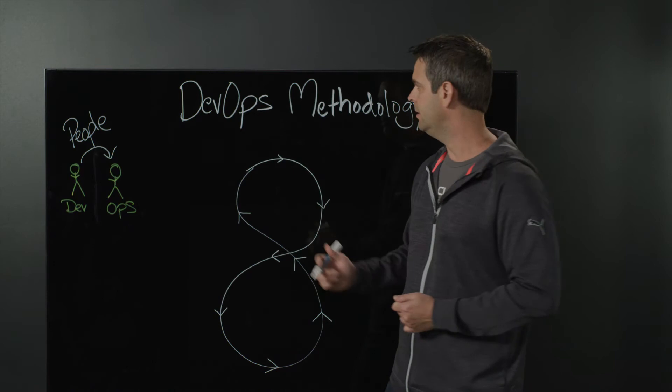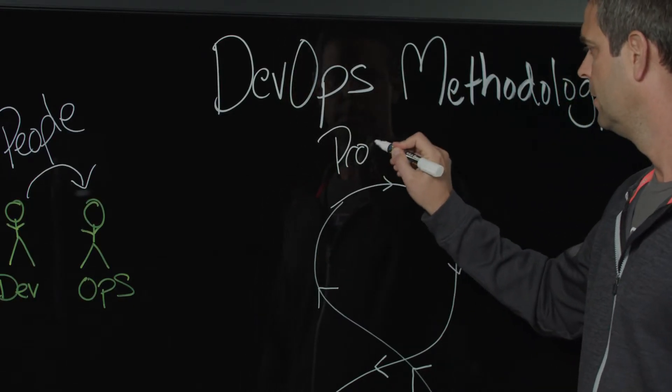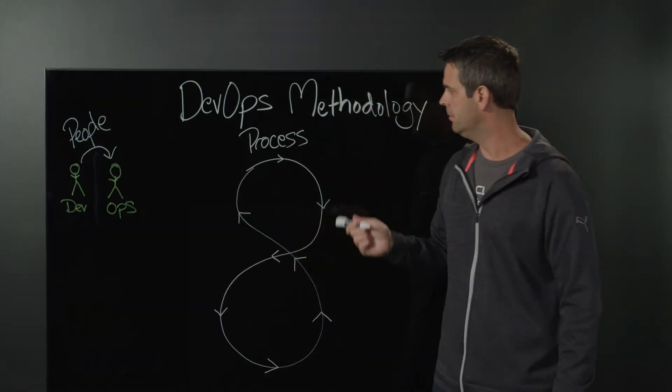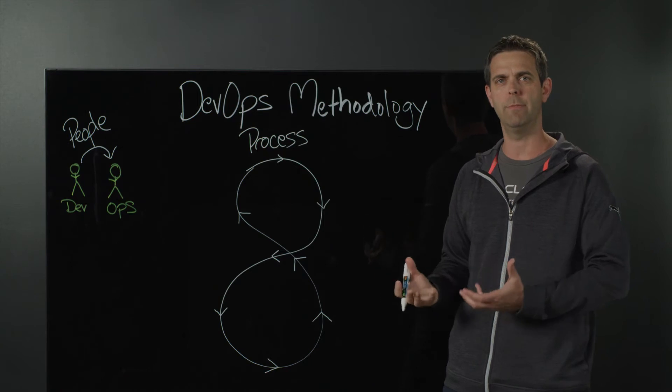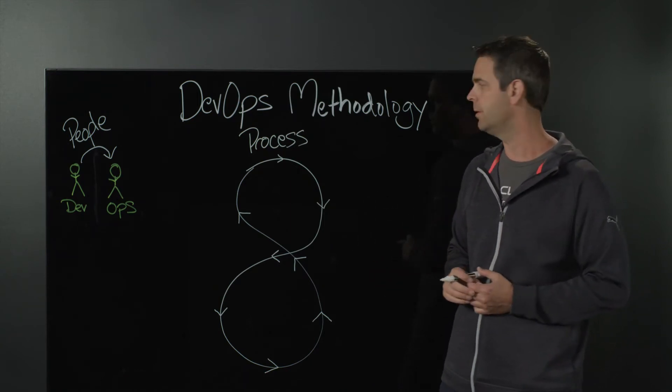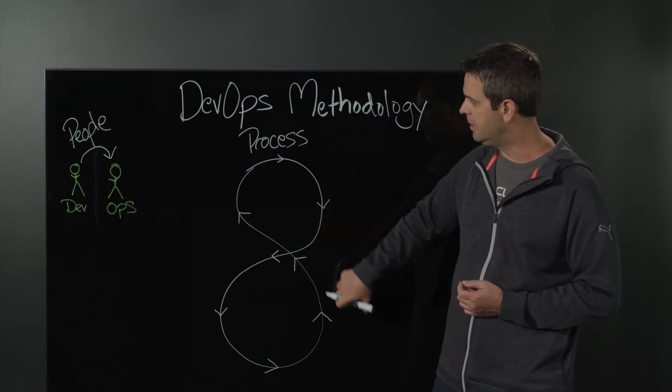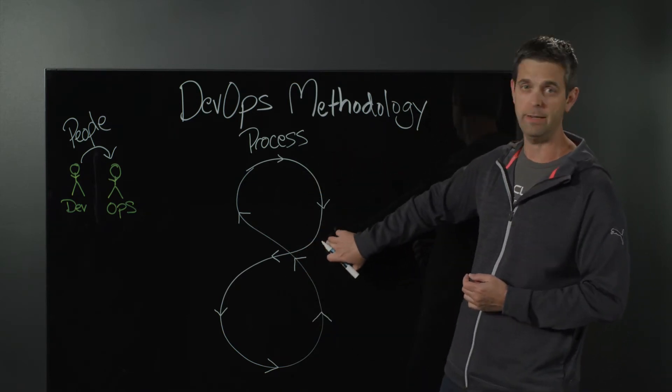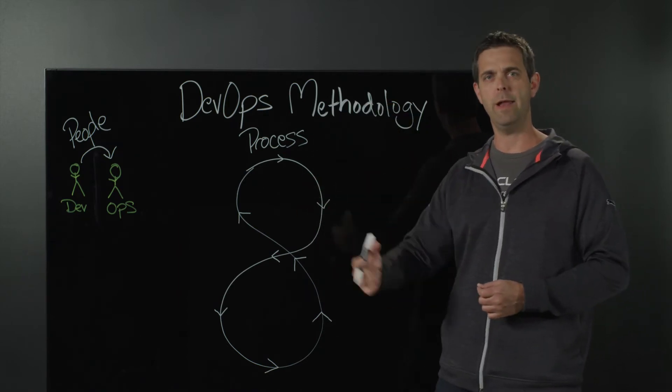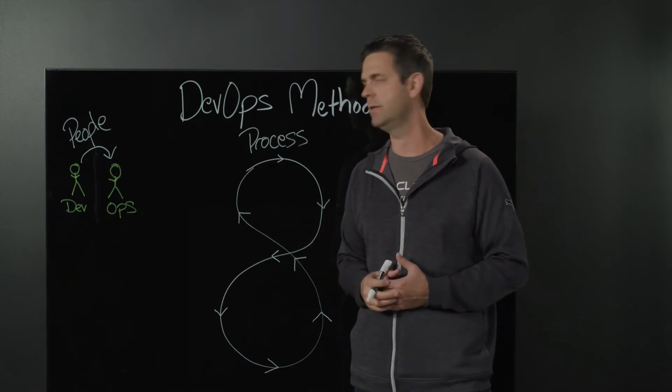Now, the next piece of this is process. The process portion tends to rely fairly heavily on the Agile methodology that you may be familiar with or that we discussed in a previous video. The process is really about creating this continuous loop, this infinity loop or figure eight, where we simply iterate repetitively to plan, build, deliver, test, and monitor our infrastructure.